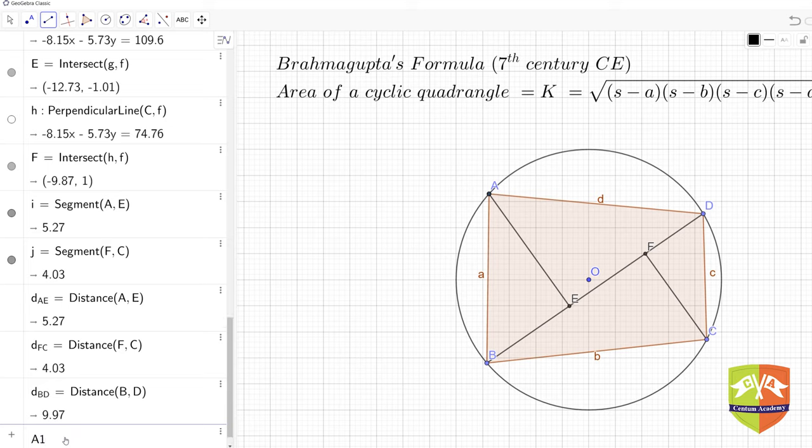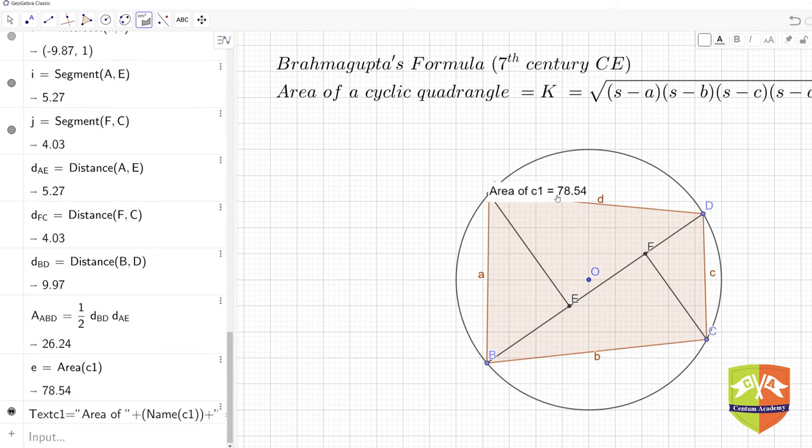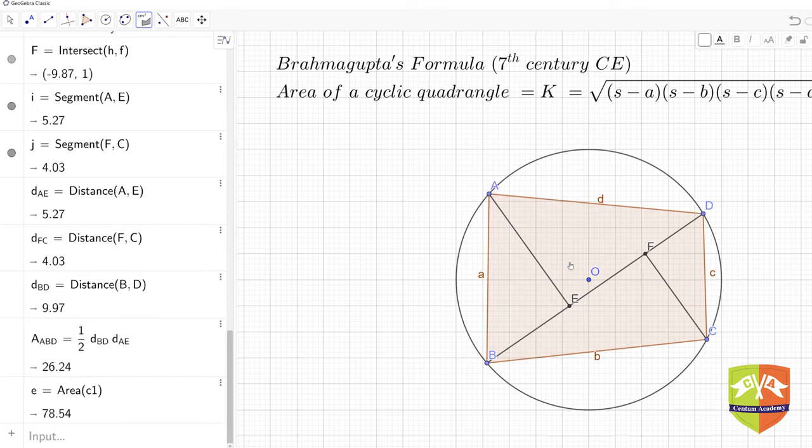Now let me calculate the first area. Area of triangle ABD equals half times base times height. So one-half times d_BD times d_AE. The value is 26.24. So area of triangle ABD is 26.24. We don't need the circle's area tool here.